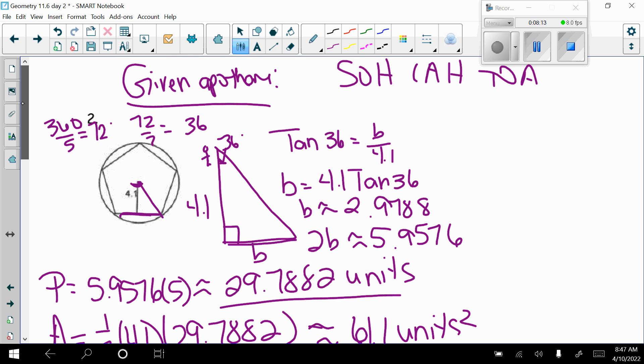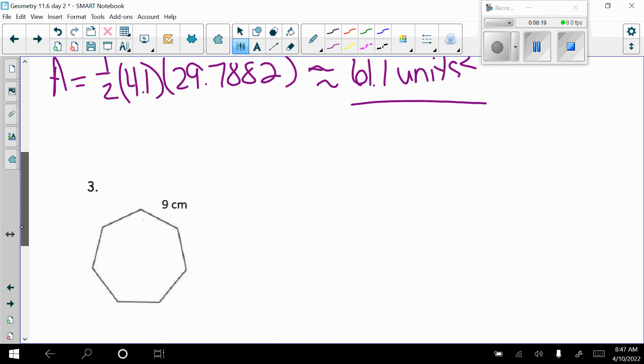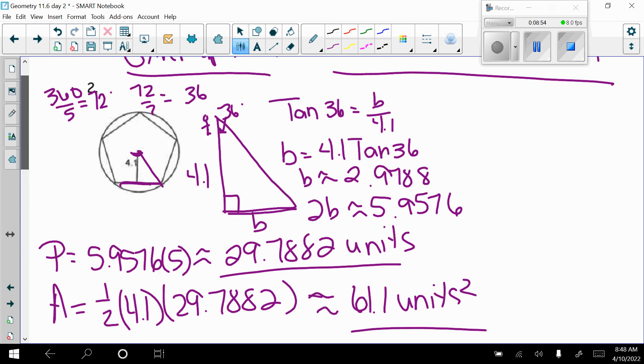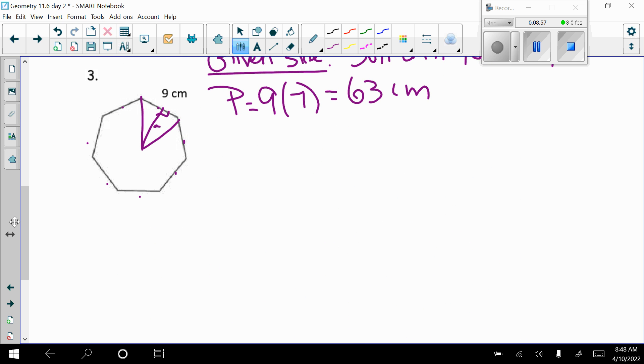So if they give me the apothem, I only have to do SOHCAHTOA one time. So if I draw this triangle and draw up my apothem, I'm looking for the apothem, right? I can go ahead and find the perimeter right away. So it's 9 times how many sides: 1, 2, 3, 4, 5, 6, 7. So my perimeter is 63. Here they gave me centimeters as my units.